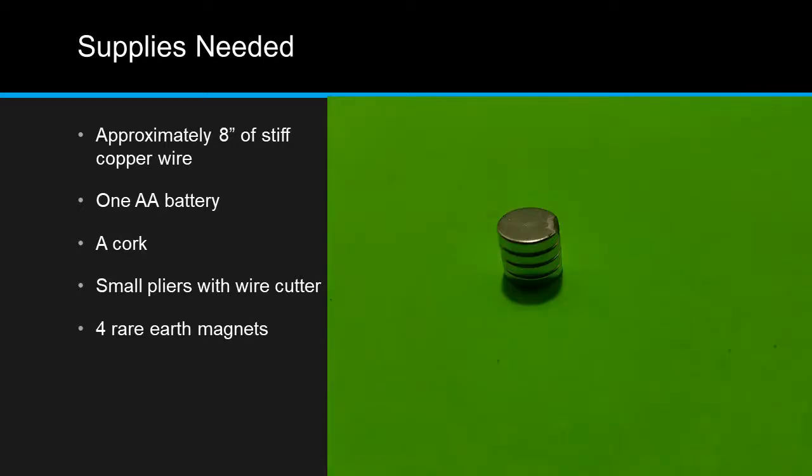Four rare earth magnets that are nearly the same diameter as the AA battery. Rare earth magnets are the strongest type of permanent magnet. These you may not have lying about the house. I found these at a local hardware store. Okay, that's about it. Let's get building.